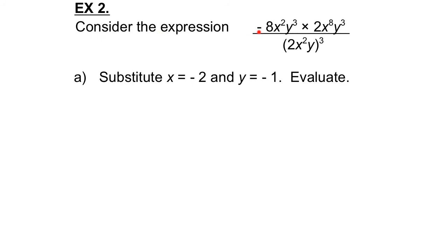Example 2. Consider the expression negative 8x squared y cubed times 2x to the exponent 8 y to the exponent 3, divided by 2x squared y to the exponent 3. There are two key words here: substitute and evaluate. Substitute x equals negative 2 and y equals negative 1. When we substitute, we take these values for x and y and replace x and y everywhere we see them in the expression. Once that's done, all the values are known and we can evaluate — evaluate means get the value of the expression, basically just do the math.